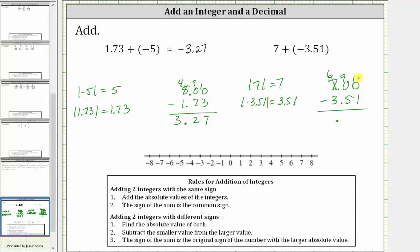10 minus one is nine, nine minus five is four, and six minus three is three. This difference is positive 3.49, and because the positive seven had the larger absolute value, the original sum is positive 3.49.